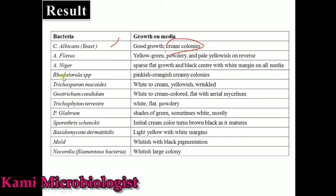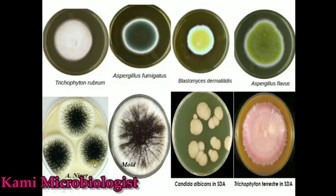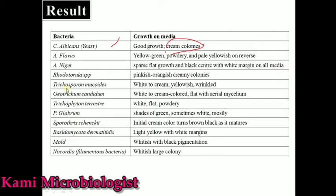Rhodotorula species produce pinkish or reddish creamy colonies, as you can see on screen. Trichosporon species show white to creamy yellowish wrinkled colonies — as you can see, these are the Trichosporon colonies.